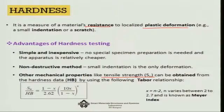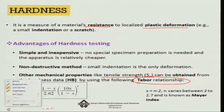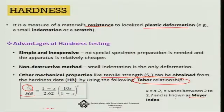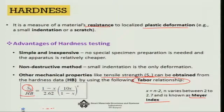For example, for metals there is something called a Tabor relationship, in which if you know the hardness data in the Brinell scale — the HB data — you can find out the ultimate tensile strength SU using this relationship, where x is n minus 2 and n varies between 2 to 2.7. This is also known as the Meyer index. It is just an example of how you can exploit the hardness data to find out certain important properties.